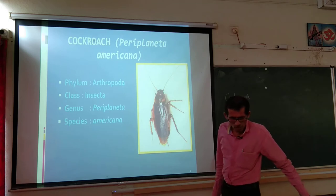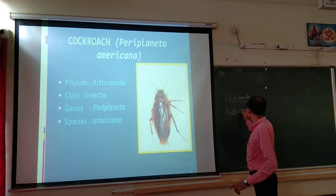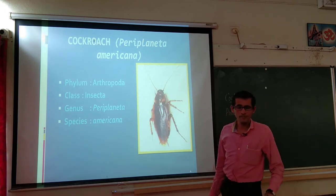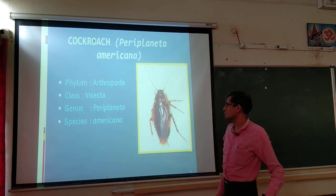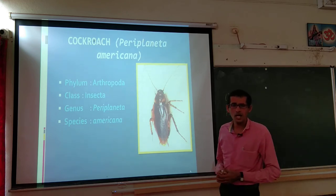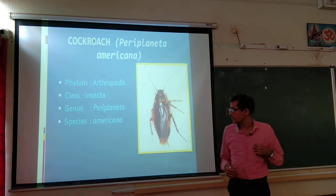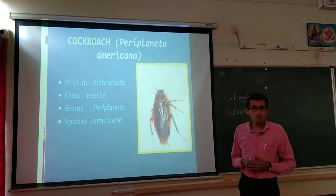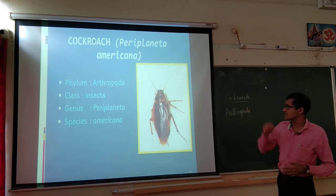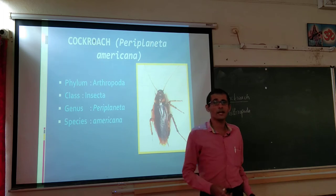Cockroach belongs to one of the important phyla under the animal kingdom — Arthropoda, which is the largest phylum in Kingdom Animalia. Cockroach belongs to phylum Arthropoda, class Insecta — the largest class under Kingdom Animalia. The genus is Periplaneta and the species is americana, so the zoological name is Periplaneta americana.